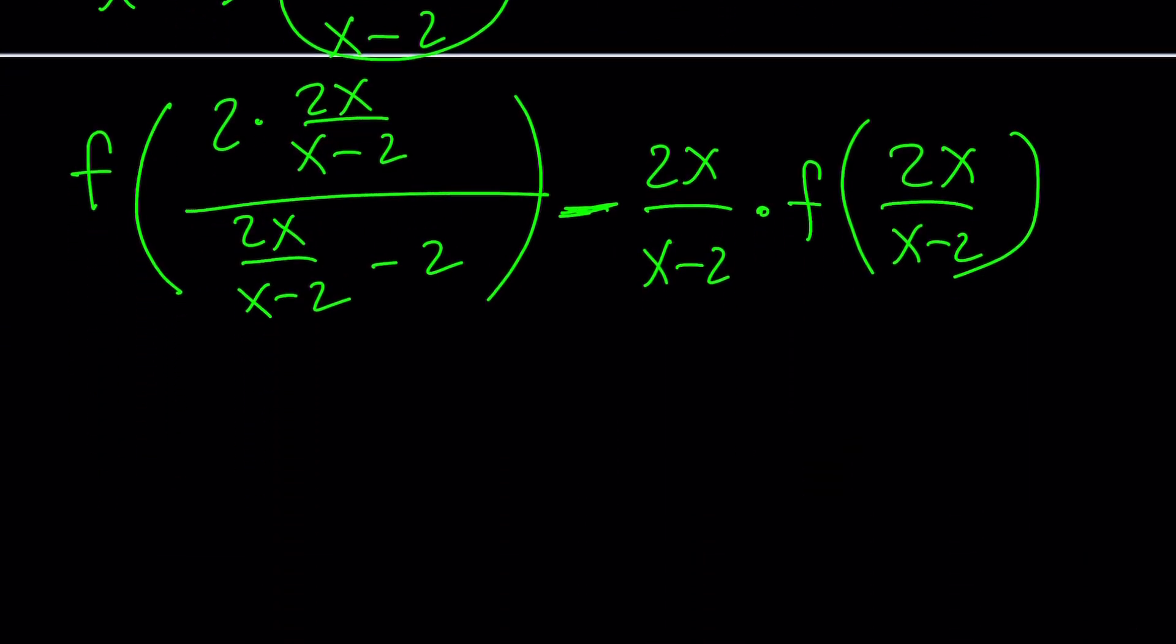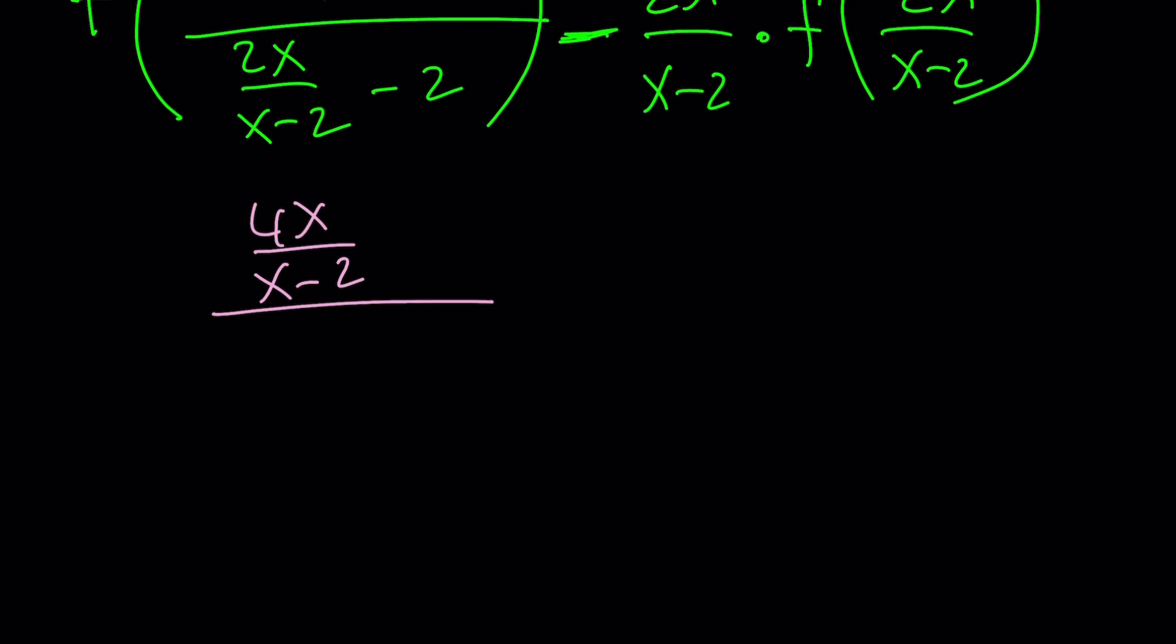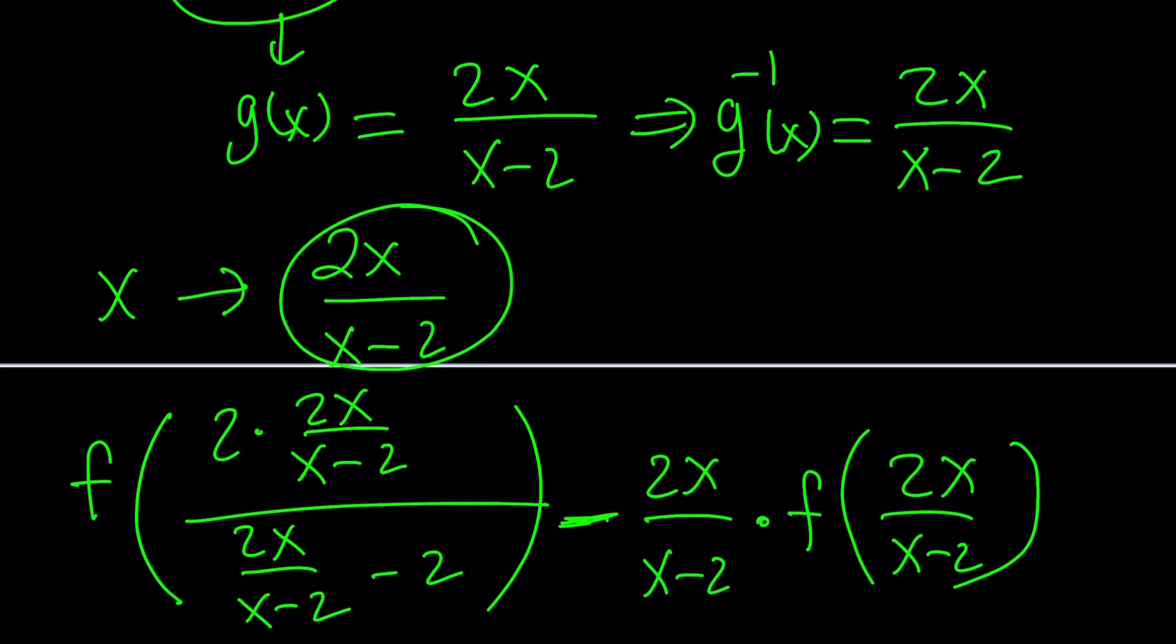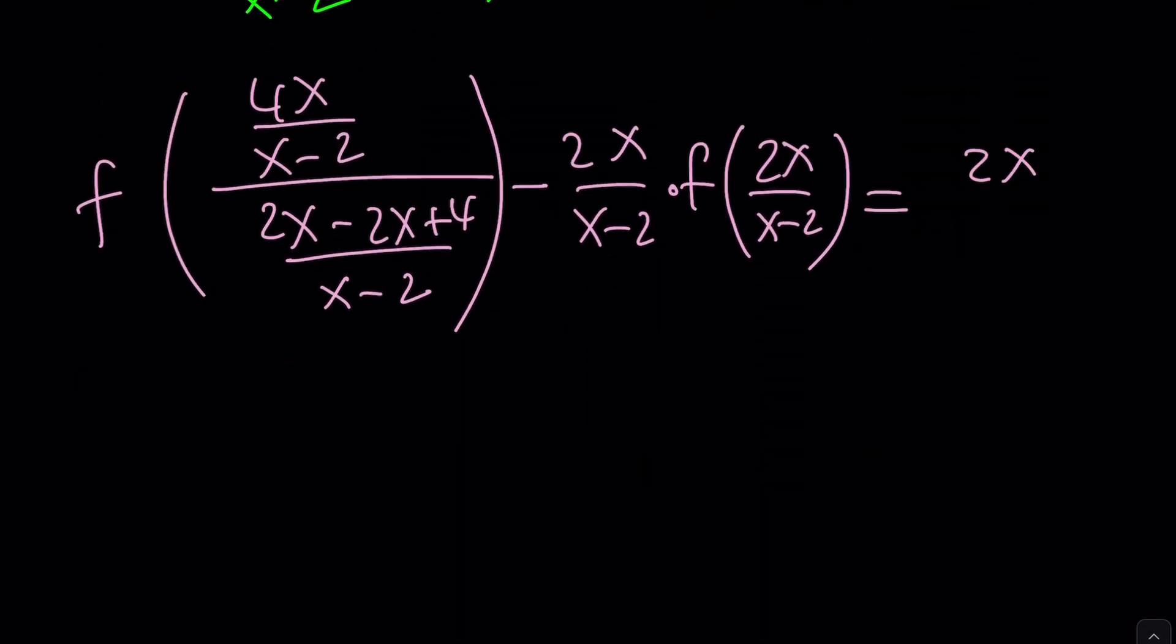Let's go ahead and simplify the inside parentheses here. So we're going to have 4x over x minus 2 here, and in the denominator, this is a complex fraction, 2x minus 2x plus 4, divided by x minus 2. That's going to be f of the whole thing. And then minus 2x over x minus 2 times f of 2x over x minus 2. And that's equal to 2x over x minus 2 squared. We replaced x with this.